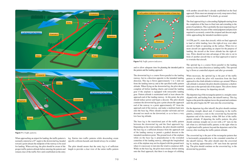While on the base leg, the pilot must ensure, before turning onto the final approach, that there is no danger of colliding with another aircraft already established on the final approach. Pilots must not attempt an overly steep turn to final, especially uncoordinated. If in doubt, go around. The final approach leg is a descending flight path starting from the completion of the base-to-final turn and extending to the point of touchdown. This is probably the most important leg of the entire pattern, because of the sound judgment and precision required to accurately control the airspeed and descent angle while approaching the intended touchdown point.